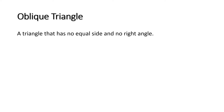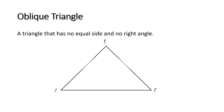So let us first talk about oblique triangle. What is an oblique triangle? An oblique triangle is a triangle that has no equal side and no right angle, meaning each side has a different length compared to the other sides and no angle will be equal to 90 degrees. So let's say we have this oblique triangle, triangle ABC, with sides A, B, and C, wherein each side has a different length.